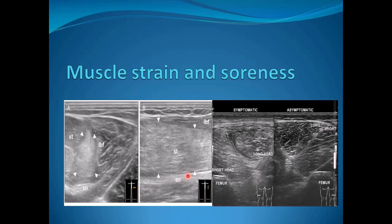Muscle strain and delayed onset muscle soreness are additional findings. In the setting of muscle strain, the patient usually complains of pain during exercise. This example shows the biceps femoris short head and long head — comparing the healthy side to the affected side, we notice a subtle increase in echogenicity of the muscle fibers with an intact fibrillar pattern and no intramuscular hematomas, which is the classic appearance of muscle strain.